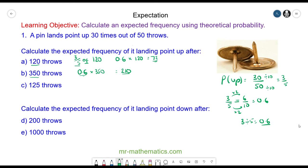For question c we have the experimental probability of 0.6 multiplied by the sample of 125, and we would expect it to land point up 75 times.